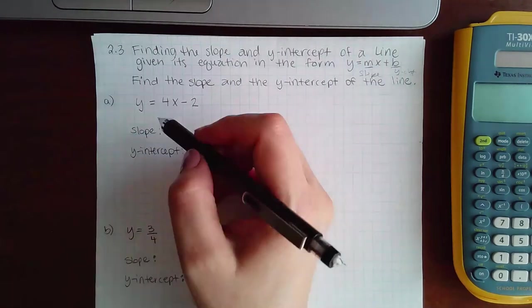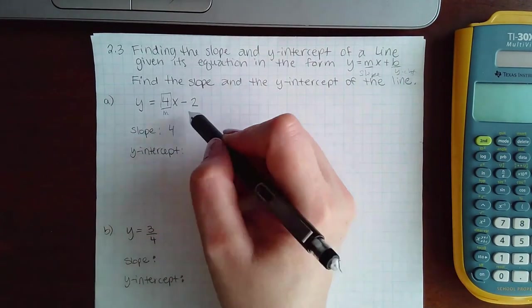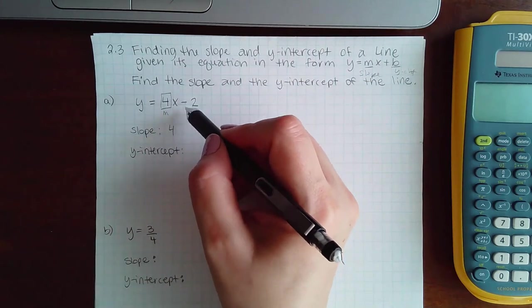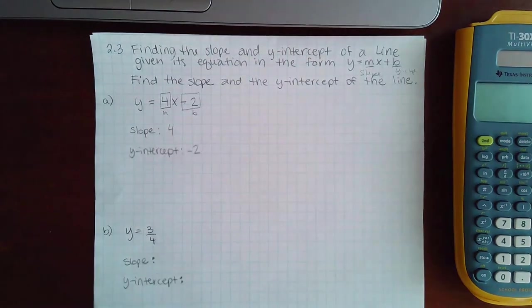So for this instance, the m is going to be 4, which is my slope, and the b is actually a negative 2. That's my b, so my y-intercept is negative 2.